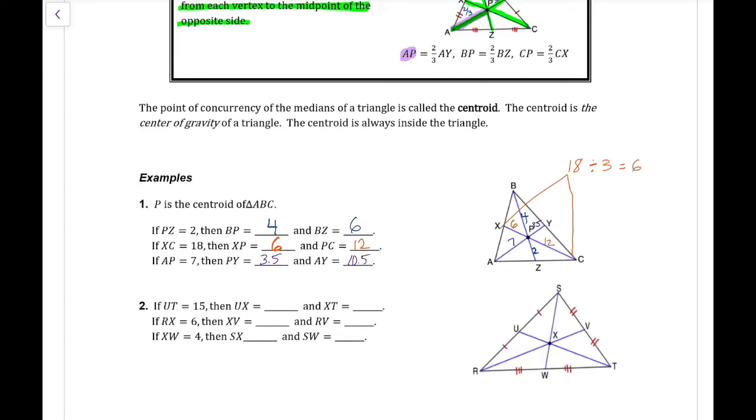Let's look at example two. If UT equals 15, we're finding UX. The whole thing is 15. What I want to do is divide that by three and I get five for the short side. So the long side would be 10. So UX would be 5 and XT would be 10.